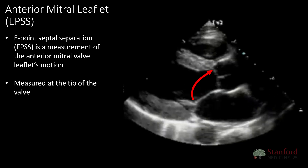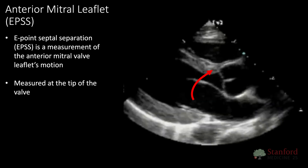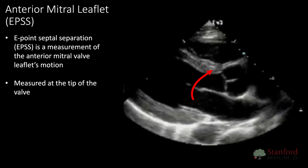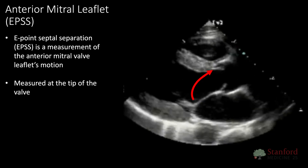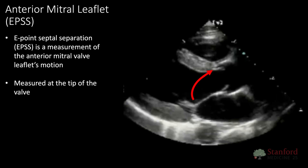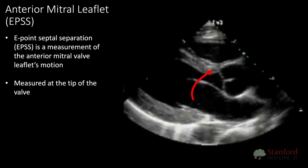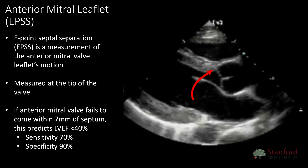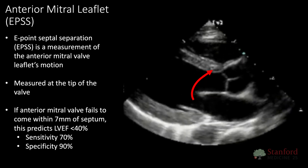For a more quantitative assessment, one common POCUS maneuver is evaluation of the E-point septal separation, also known as EPSS. In a parasternal long image, we're showing the anterior leaflet of the mitral valve as it flaps between systole and diastole. EPSS is essentially a measurement of this anterior leaflet as it moves close to the interventricular septum. If this valve leaflet fails to come within 7 millimeters of the interventricular septum, this predicts LV systolic function of less than 40% ejection fraction, with a sensitivity of about 70% and a specificity above 90%.